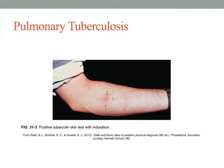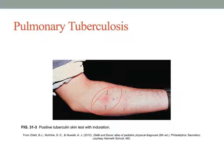A positive TB skin test appears red and elevated. Sometimes people get bruising and think they are positive, but the reaction must be red. People trained to read TB skin tests look for a reaction of 5 millimeters or greater to be considered positive; a small red mark is not sufficient.